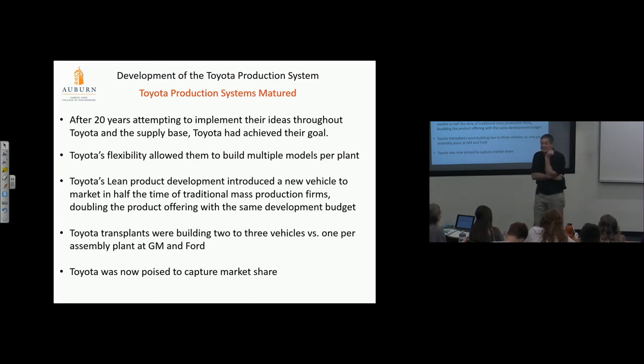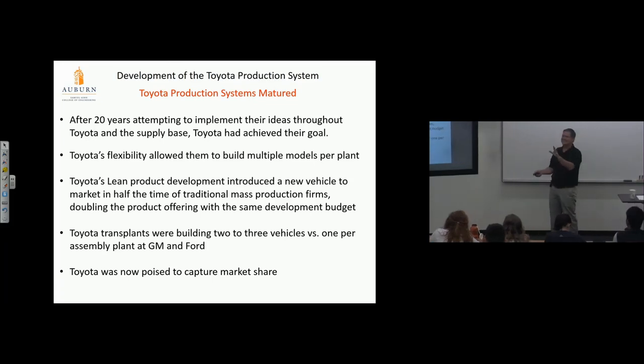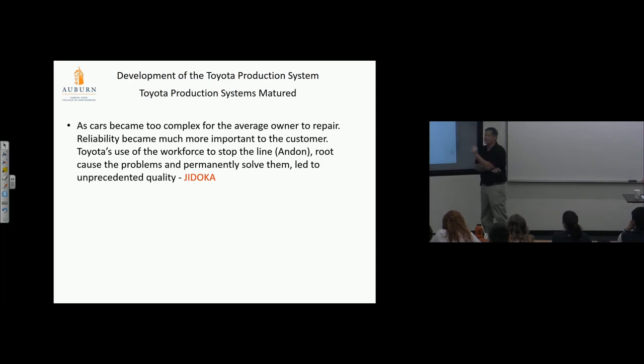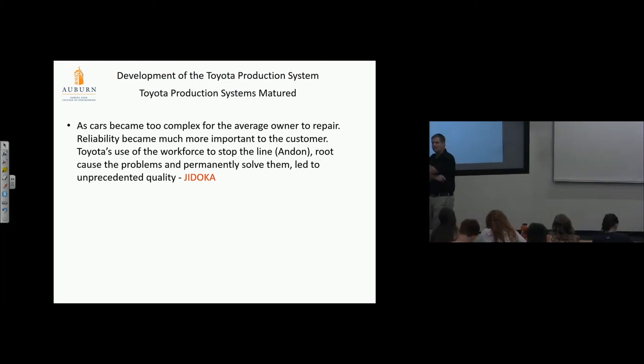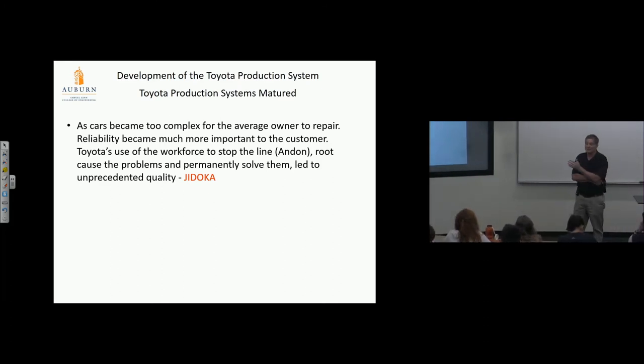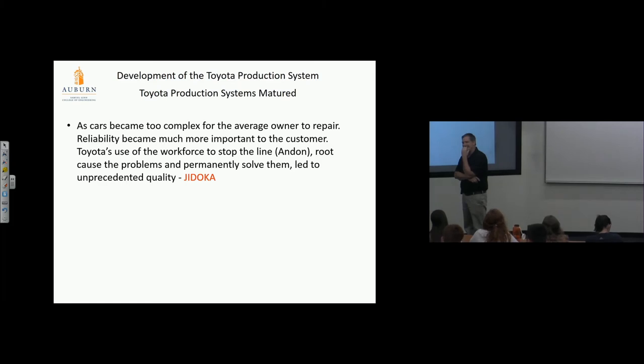As cars became too complex for the average owner to repair, reliability became much more important to the customer. Toyota's use of workforce to stop the line, andon, root cause the problems, and permanently solve them led to unprecedented quality. I saw this back in the 80s—there were traders in the population in the Detroit area. They just started buying Toyotas. 'Hey, we build American cars here.' They were buying Toyotas. They couldn't resist because these cars were obviously better cars. Once that became pretty well known, you're in serious trouble—you're gonna lose market share rapidly. You bought your first Toyota, didn't you, Jay? I bought a Land Cruiser to get around in the snow in Vermont, then traded that for a Toyota Celica in 1970, 71, 72. The Celica was one of the first ones off the boat.